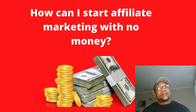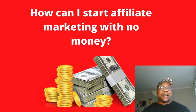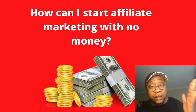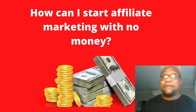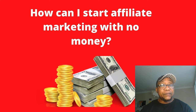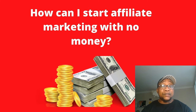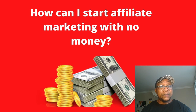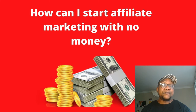The second tool that we need is to register at Warrior Plus. Warrior Plus is a place where you will register for affiliate products to promote. And the third tool is JVZoo — it's the same thing, a place where you register for affiliate products that you want to promote. Warrior Plus deals mainly in info products, and JVZoo deals in software products.